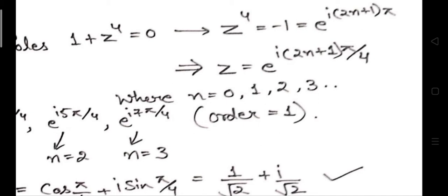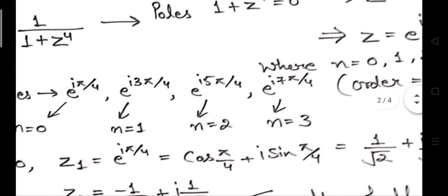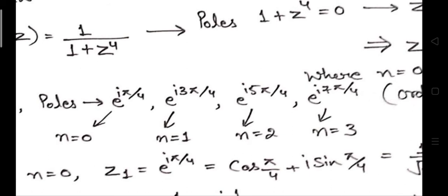For the first four values of n you get poles in the first, second, third, and fourth quadrant respectively. For further values, the pole values start repeating, so we only take the first four. When n equals 0, 1, 2, and 3, we get the four pole values. Further values give the same results due to the properties of trigonometric functions.